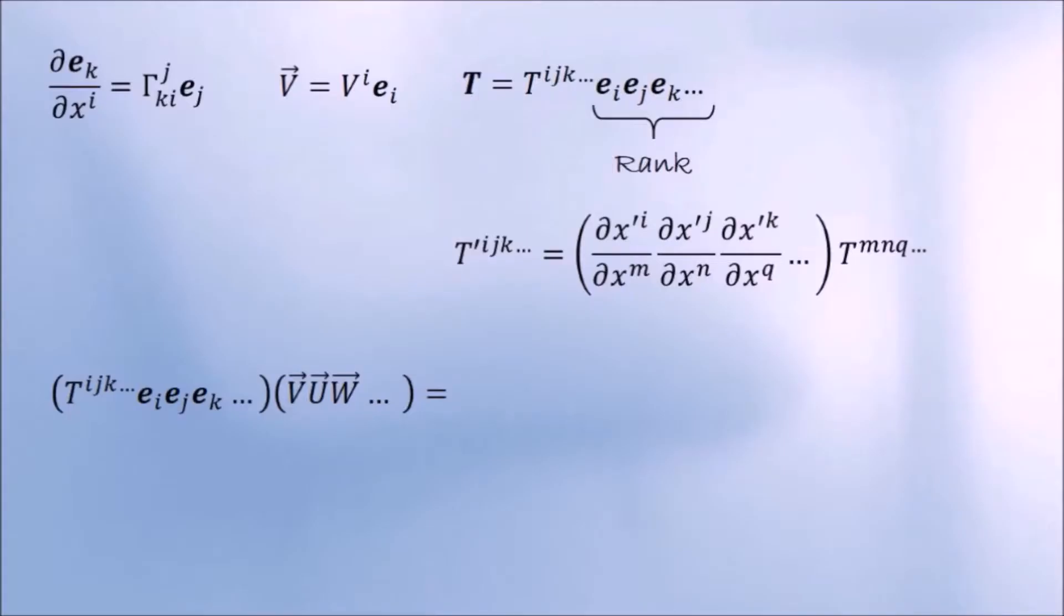In a previous video I said that the rule of tensor multiplication is this. The first basis is dotted with the first vector, the second basis with the second vector, and so on. I realized afterwards that tensor algebra is much more forgiving than that. There isn't really any rule. It all depends on what kind of object you want to form by combining two tensors.